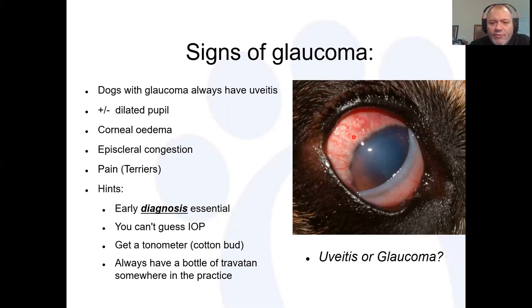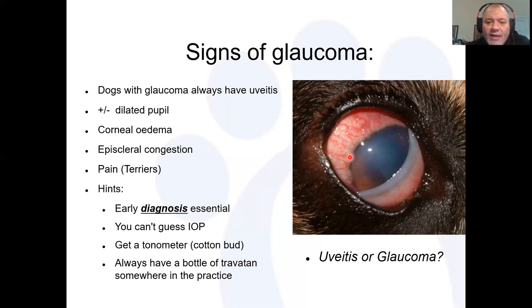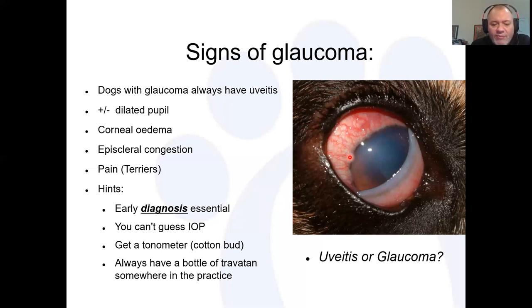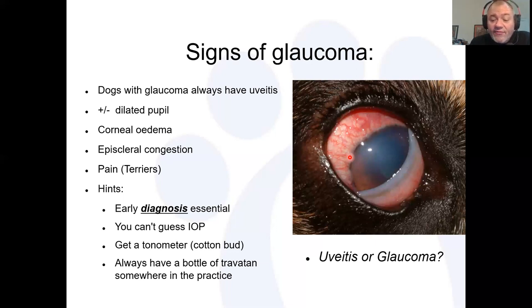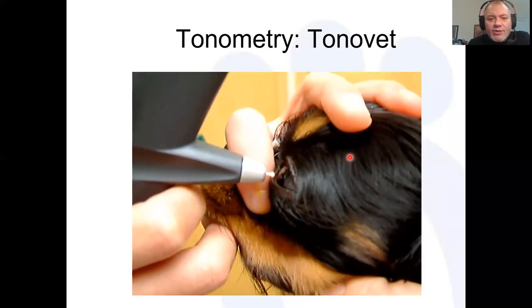Of the drugs available in practice, the prostaglandins are the most potent at reducing intraocular pressure. Having access to travatan, xalatan, or latanoprost — the generic and much cheaper form — is very sensible. However, you must be aware that these are only for angle closure glaucoma. In animals with primary lens luxation you can make things significantly worse, because these drugs constrict the pupil and can trap the lens in the anterior chamber and trap the vitreous at the pupil.